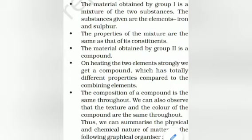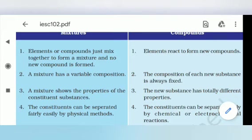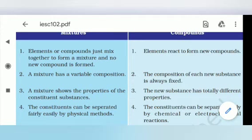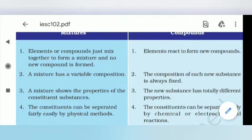We can summarize the physical and chemical nature of matter as follows: elements or compounds simply mix together to form a mixture and no new compound is formed. In a compound, elements react to form a new compound. A mixture has variable composition while a compound has fixed composition throughout. A mixture shows the properties of its constituent substances, whereas a compound is a totally new substance with different properties. In a mixture, constituents can be separated by physical methods, while in a compound, separation requires chemical or electrochemical reactions.